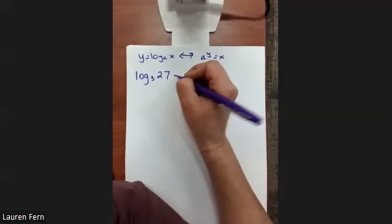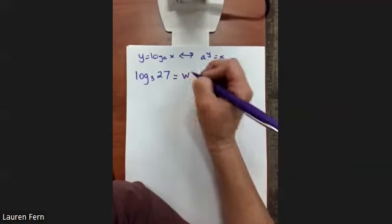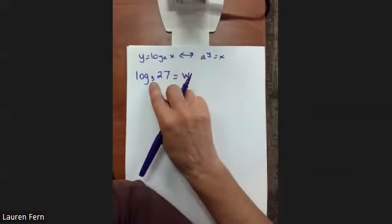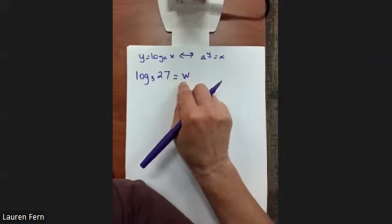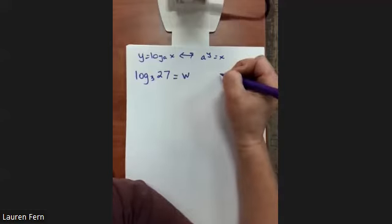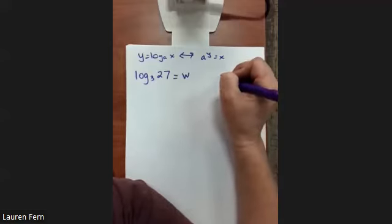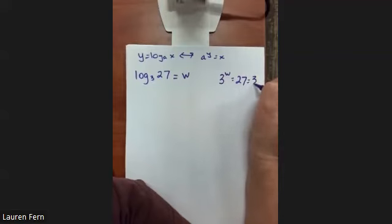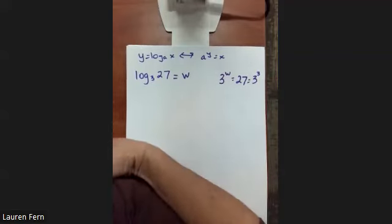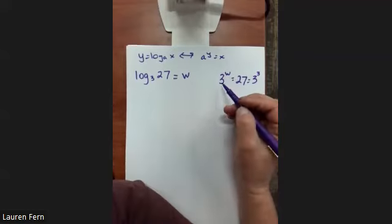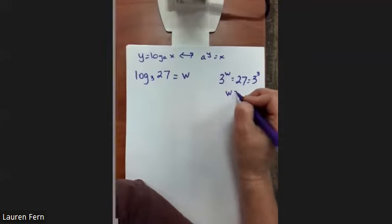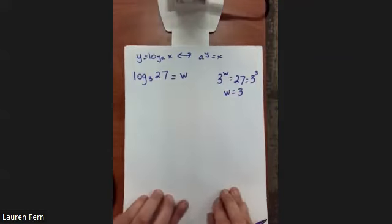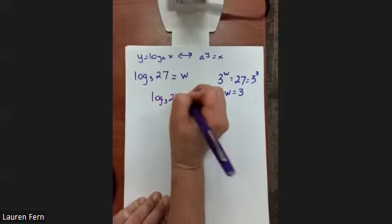Let's call it w. Change to equivalent exponential form: 3^w = 27. Isn't 27 the same as 3 cubed? So 3^w = 3^3, which means w = 3. If two things with the same base are set equal, their exponents must be the same. So log base 3 of 27 = 3.